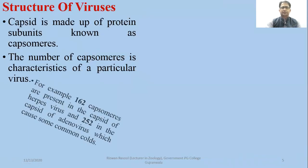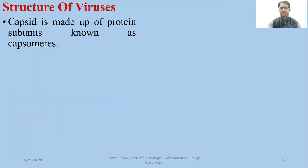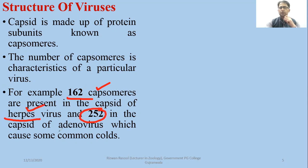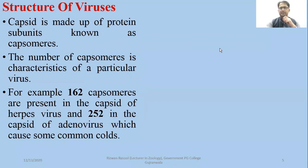In the structure of the virus, we are talking about the capsid. Capsid is made up of protein. Proteins have smaller subunits known as capsomeres. The number of capsomeres is specific to each virus. For example, there are 162 capsomeres observed in the case of herpes virus, and 252 capsomeres observed in the case of adenoviruses.